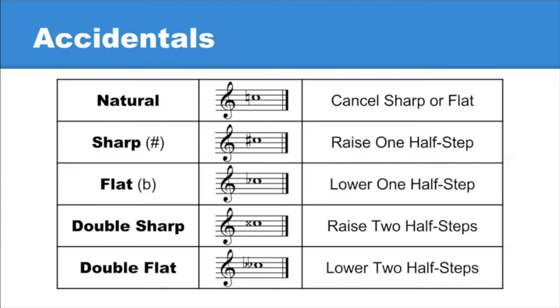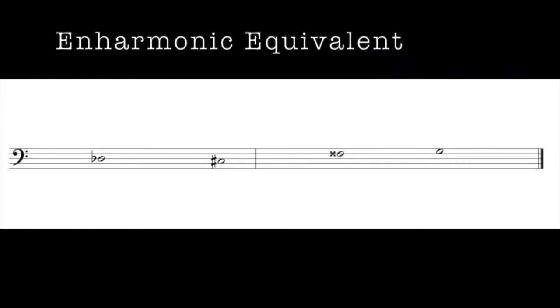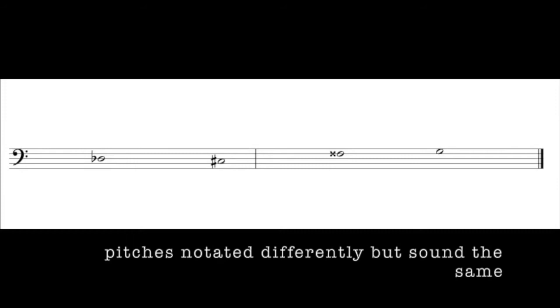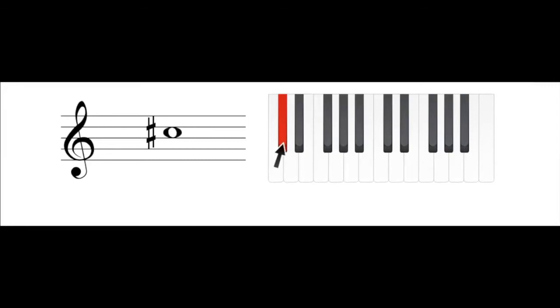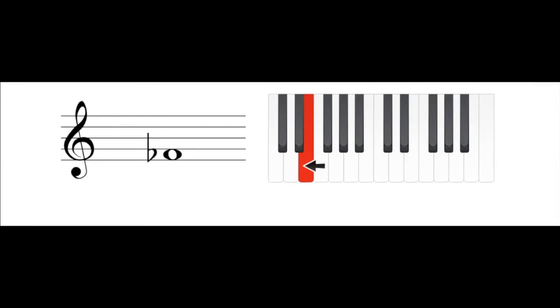The final topic we're going to cover in this lecture has to do with the term enharmonic equivalent. An enharmonic equivalent, which is something we've seen quite a few times already in this lecture, is a pitch that is notated differently but sounds the same as another pitch. In our first example, C sharp is notated differently but sounds the same as D flat. Here, we've got F flat, which is again notated differently but sounds the same as E natural.